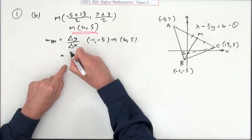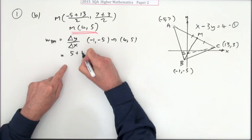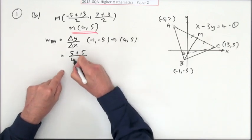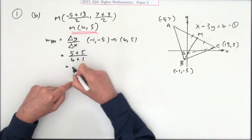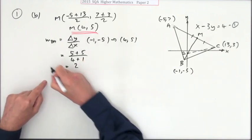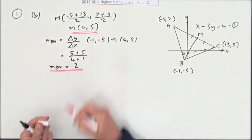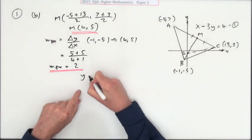Or you can be brave and jump in with 5 plus 5, 4 take away negative 1 for the x's or jump in with 4 plus 1. That's 10 over 5 which is 2. The gradient of BM is 2.